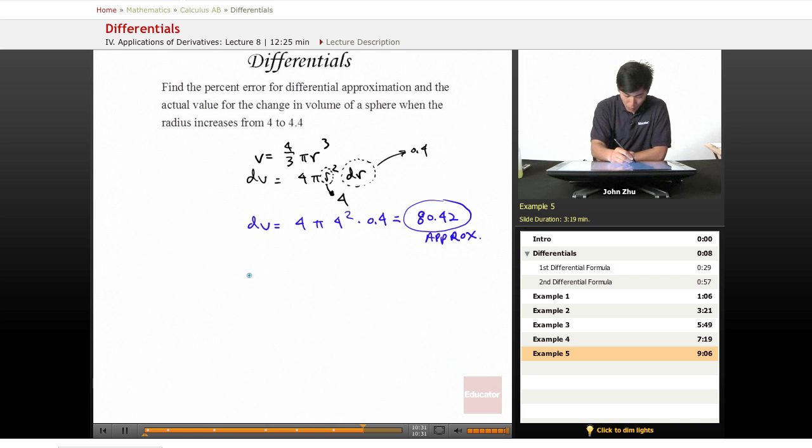The actual original volume equals 4/3 π (4)³, which equals 268.08.